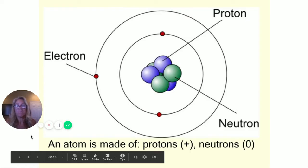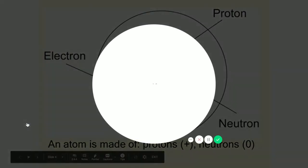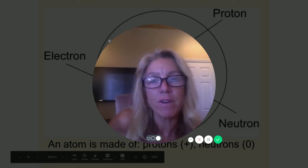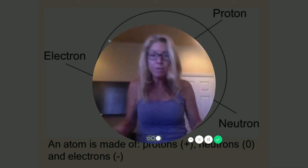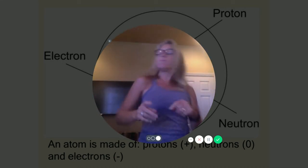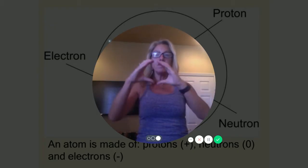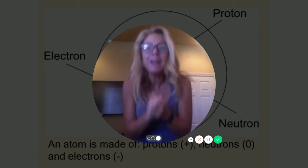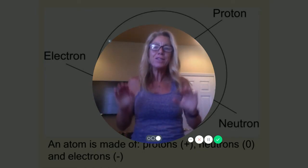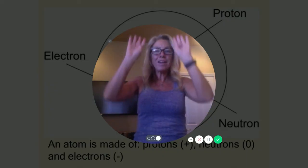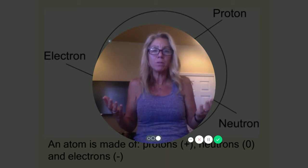Next we need to talk about the parts of an atom. I call it the 'atom story' — it's super lame, but you are never going to forget this ever again. Here we go: atoms are made out of protons, neutrons, and electrons. The protons and the neutrons are in the nucleus — atomic mass. The electrons are in energy levels: 2, 8, 18, 32. Eight is great — octet rule.